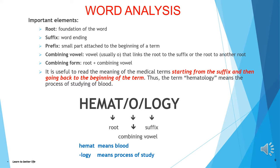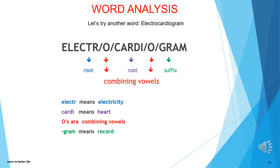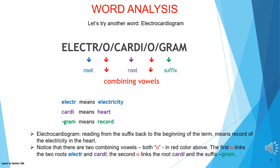It is useful to read the meaning of medical terms starting from the suffix and then going back to the beginning of the term. Thus, hematology means the process of studying blood. Let's try another word: electrocardiogram. Electr- is a root meaning electricity; cardi- is another root meaning heart; O's are combining vowels; and -gram is a suffix meaning record. Reading from the suffix back, electrocardiogram means record of the electricity in the heart.